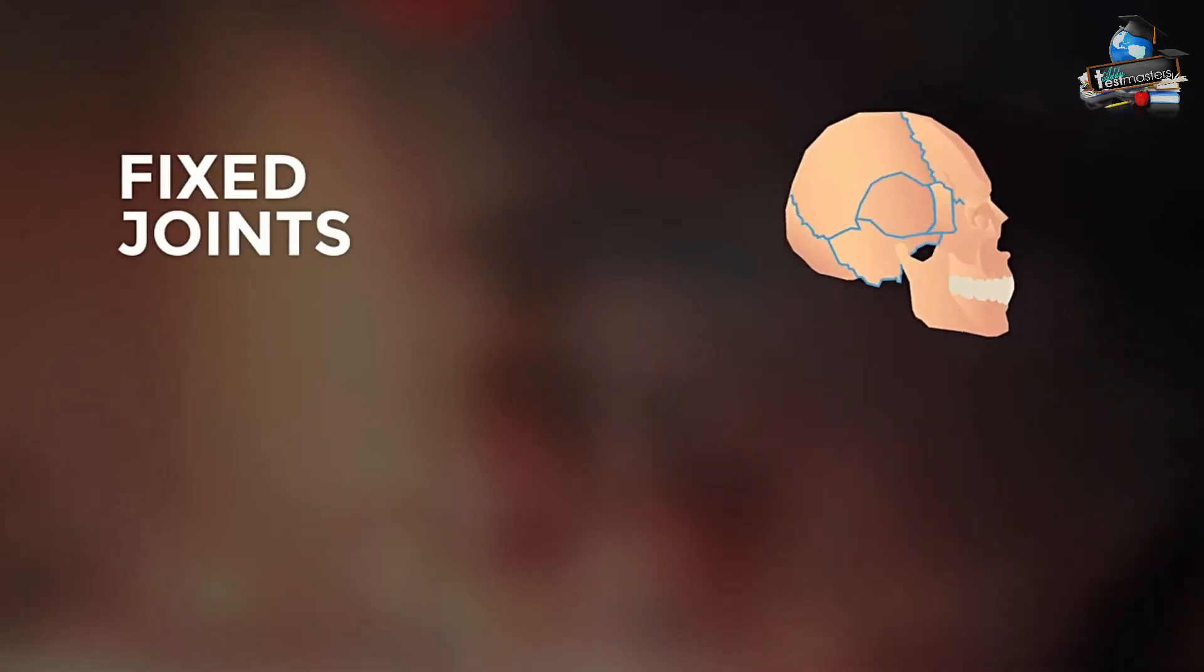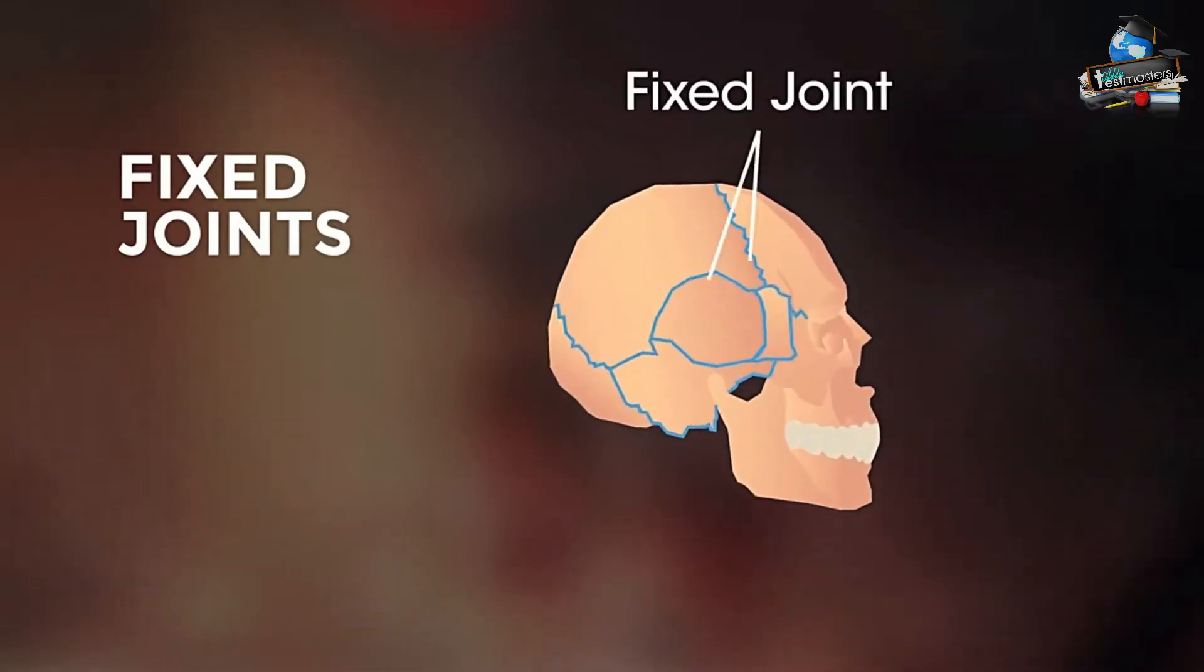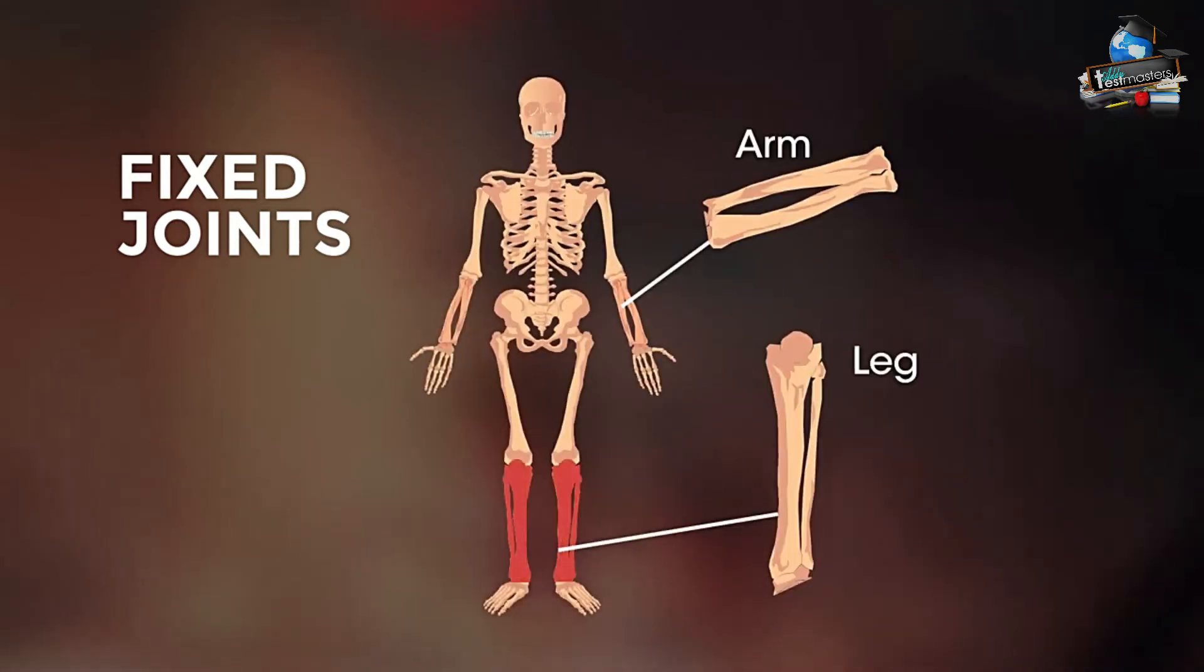Fixed joints do not move, like in your skull and the joints between long bones in your body, like in your lower leg and your arm.